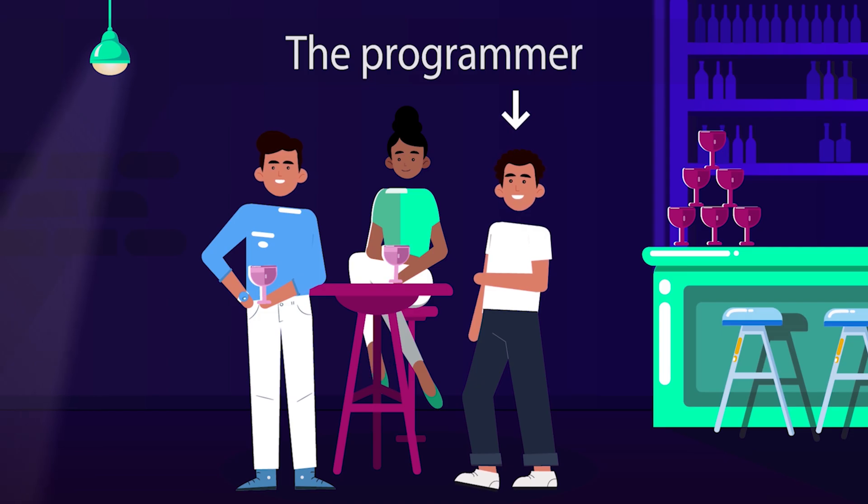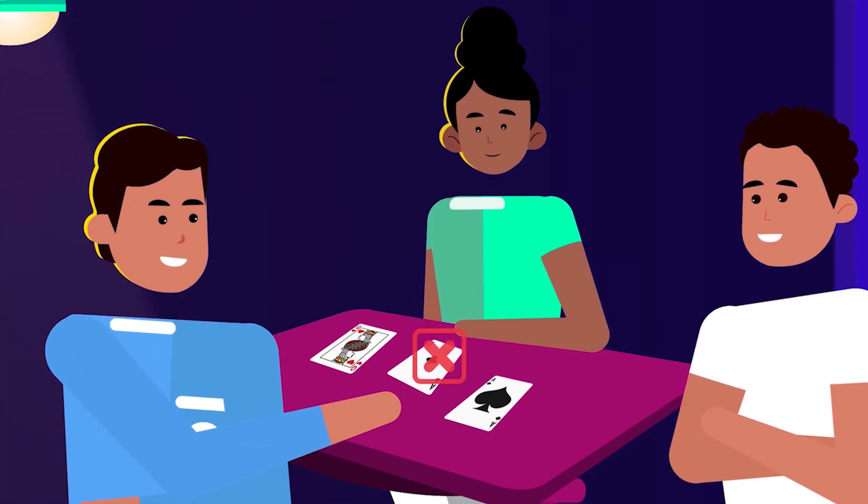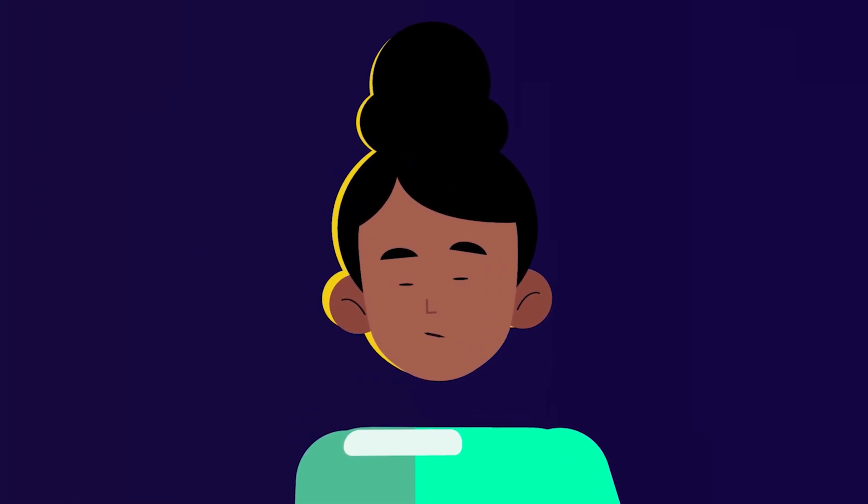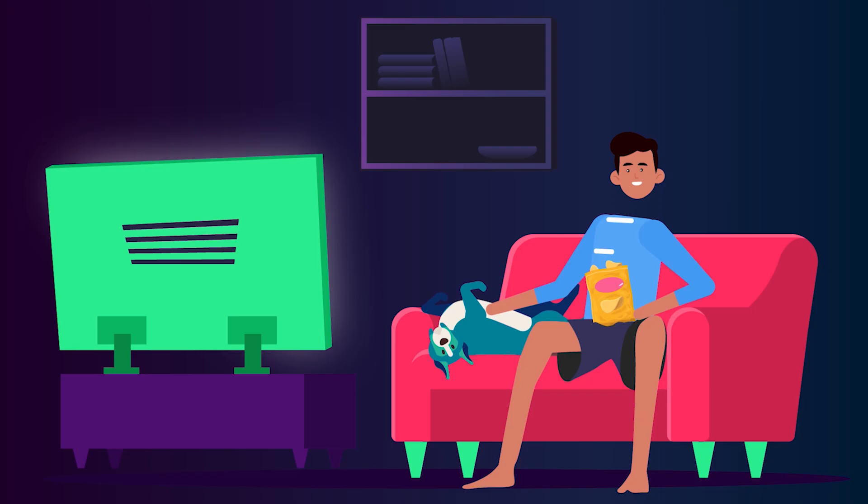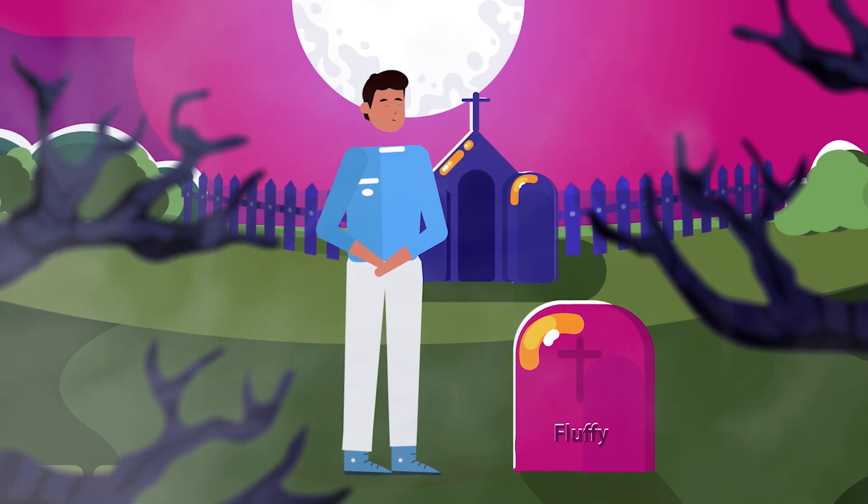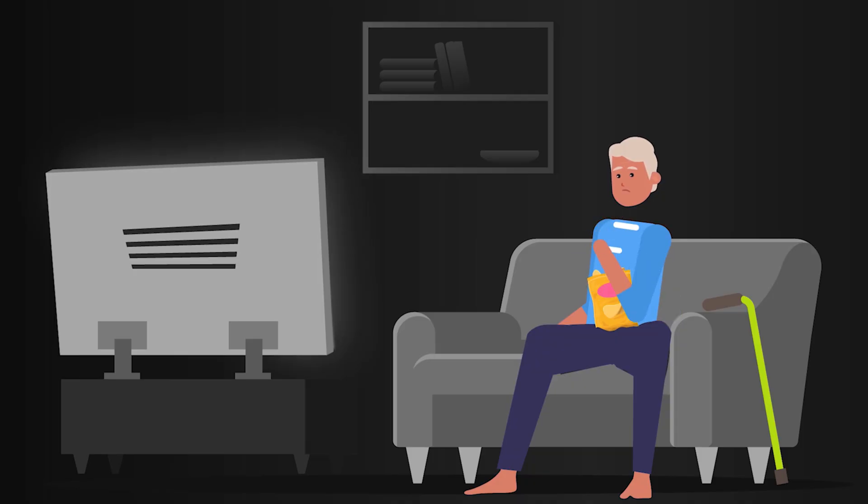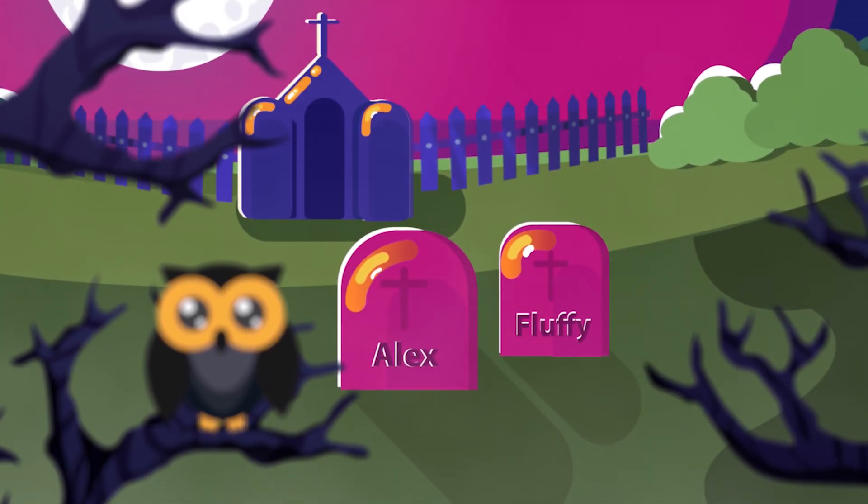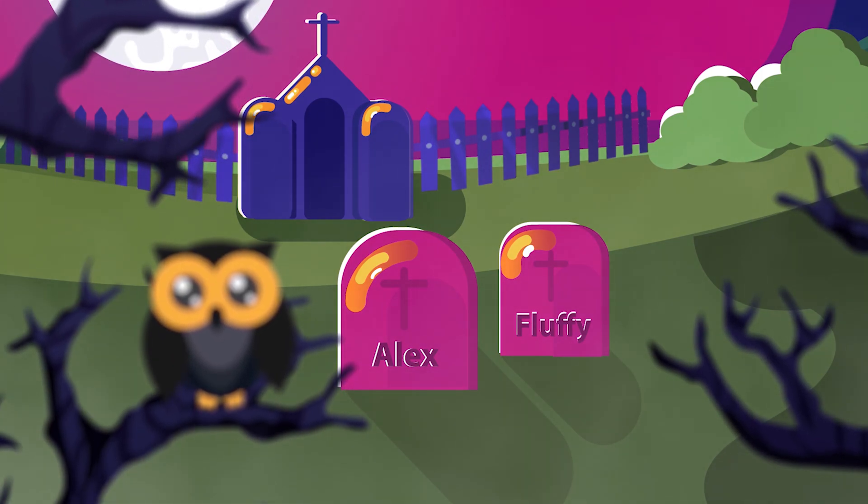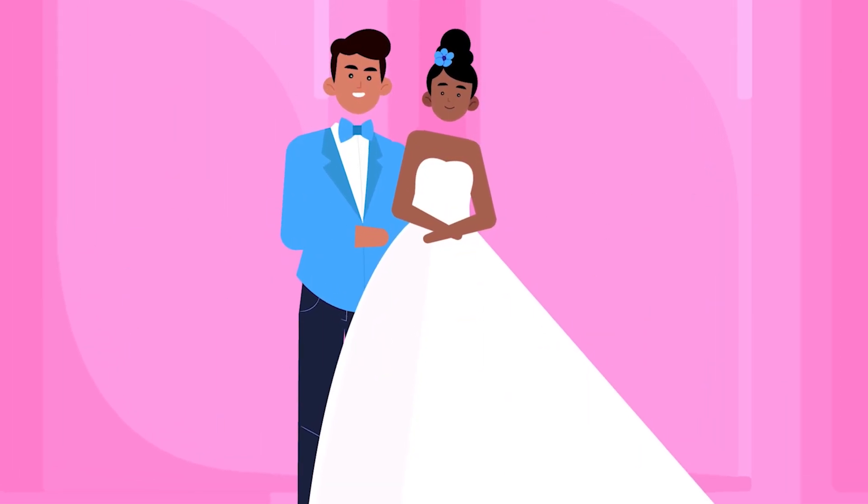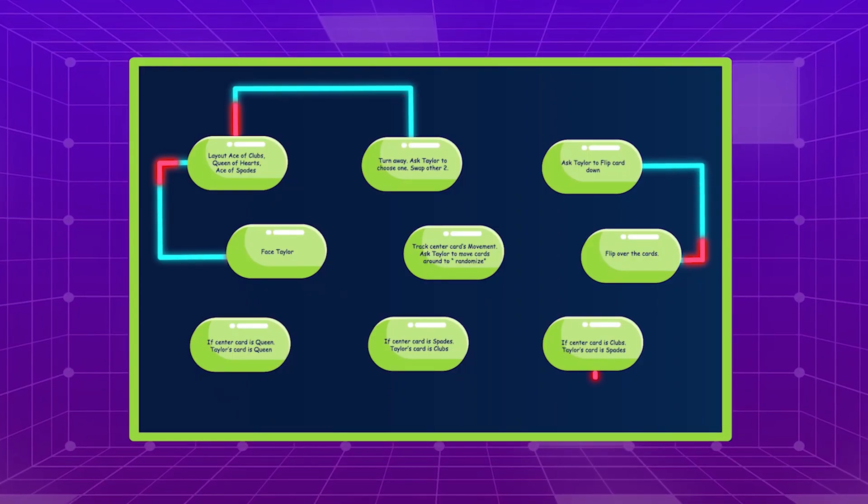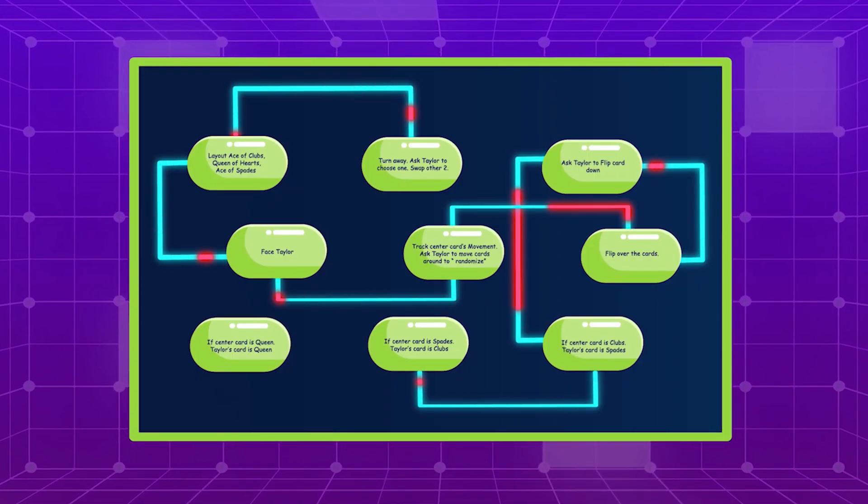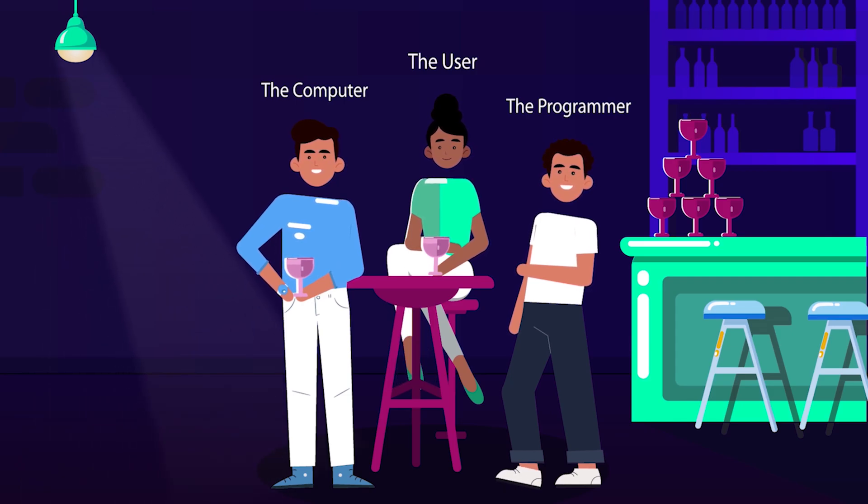You could have told Alex to do almost anything and Alex would have followed, even if it was the wrong thing to do. But you're a good programmer, so it went flawlessly. Computers just run these instructions so fast that it appears they're doing very complex tasks. In reality, they're just doing really dumb tasks very fast.